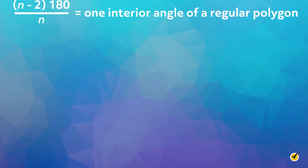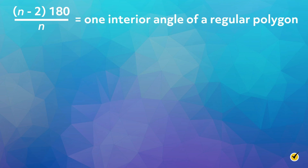Now that we've learned how to find the sum of the interior angles of a polygon, let's try to find the measure of one angle of a regular polygon. As you recall, a regular polygon is equiangular and equilateral, which means all the angles have the same measure and the sides have the same length. Since the formula n minus 2 times 180 gives us the sum of the interior angles, if we divide by the total number of angles, it will give us the measure of one angle. Therefore, n minus 2 times 180 over n equals one interior angle of a regular polygon.